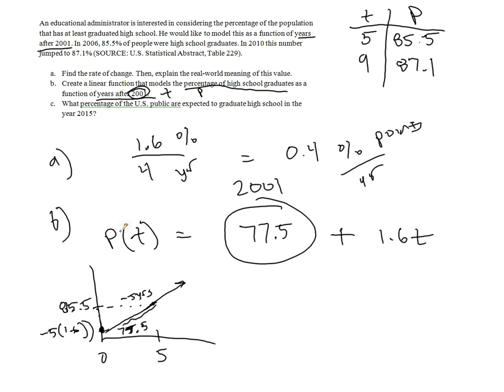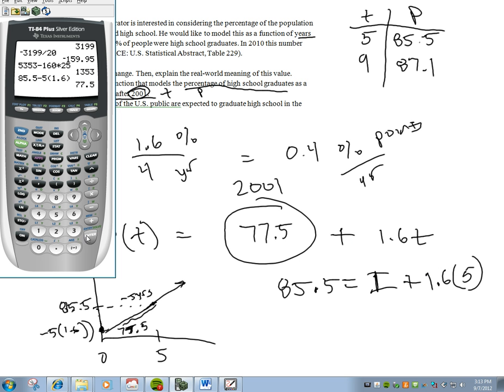The other way to do this is, well, we know that the percentage is 85.5. We don't know what the intercept is, so we'll call this whatever you want to call it. You can call it I for intercept, but we do know that that's as a function of five years after 2001. So you'll notice that 1.6 times 5 is precisely what we're doing here.